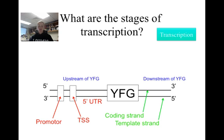Also upstream of the gene of interest is an area known as the 5' UTR, or the 5' untranslated region, which is a segment of the DNA that is transcribed but not translated into amino acids later on in the process. Note that although the 5' UTR matches up with the 3' end of the template strand, the 5' is referring to the end of the mRNA that is being synthesized.